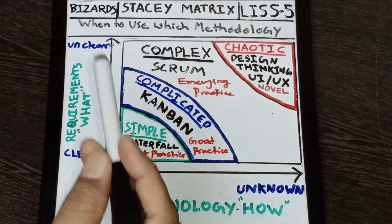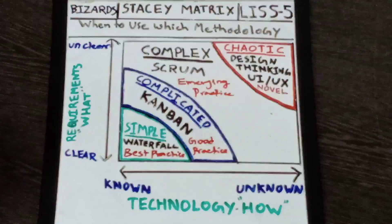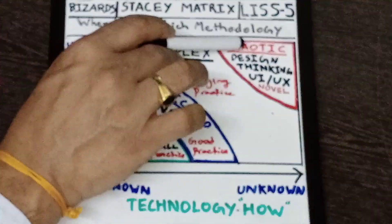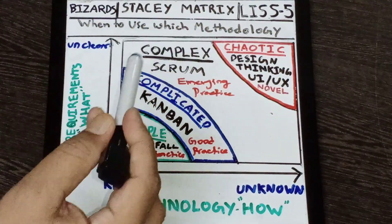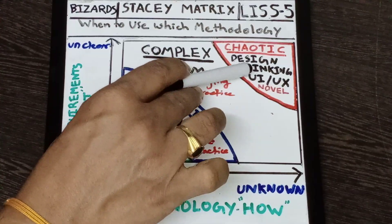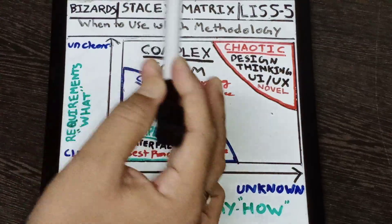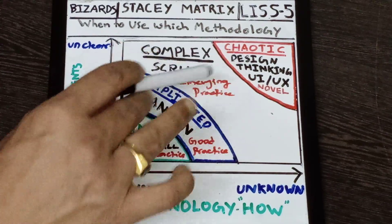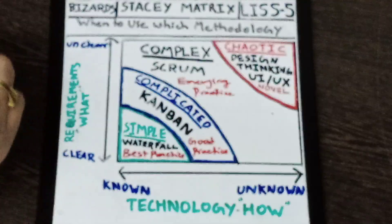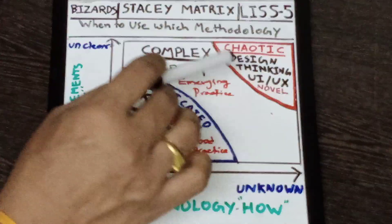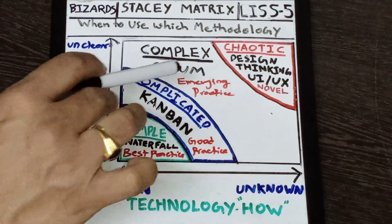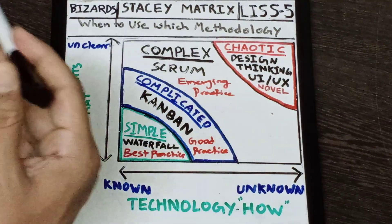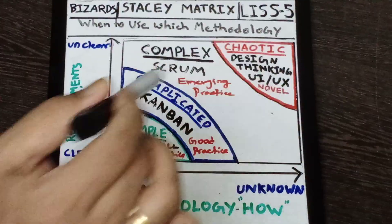The last zone is chaotic — the customer doesn't know what they want and we don't know how we are going to solve the problem. In those situations, we need to use innovation techniques like design thinking: demonstrating empathy, understanding customer personas, identifying pain points, developing observation techniques, and focusing on user experience and UI design to better understand the problem from the customer's perspective.